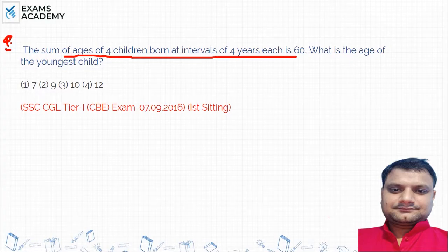So, the sum of 4 children born every 4 years is 60. What is the age of the youngest child?